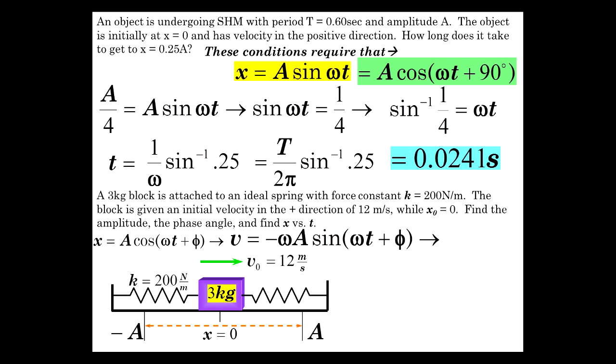So our basic expression for x is A cosine omega t plus phi, the phase angle. I'll take the derivative and velocity is negative omega A sine omega t plus phi. Well, we know from this that since x0 equals 0, then we have that A is equal to v0 over omega, since v0 equals omega A.